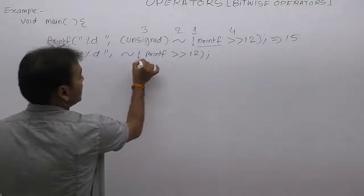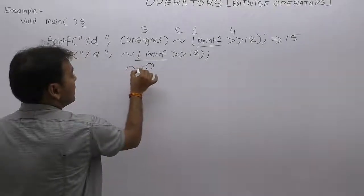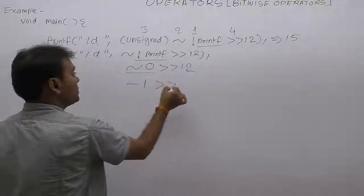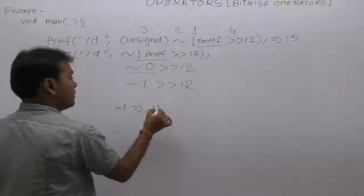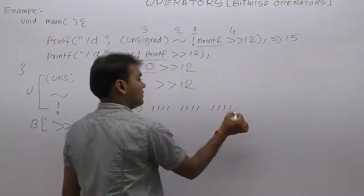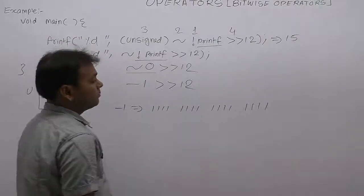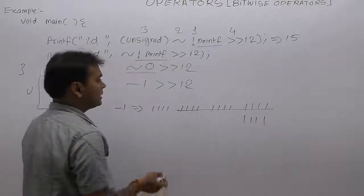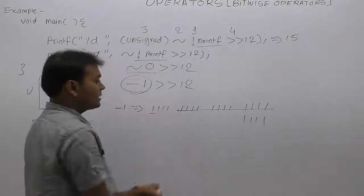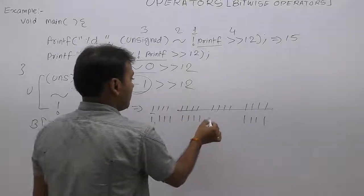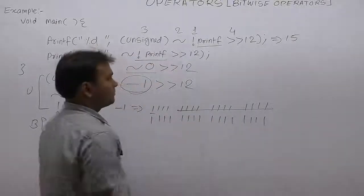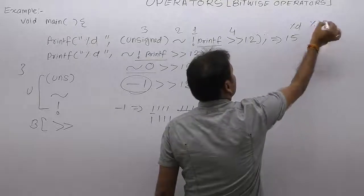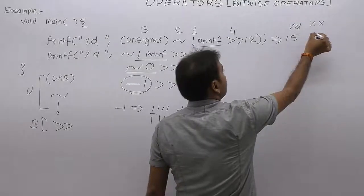For the second expression: again applying NOT converts to 0, applying ones complement gives -1, then right shift by 12. The binary number of -1 is sixteen times one (16 bits all 1). After removing 12 rightmost bits and inserting 12 ones on the left, all bits remain 1. The result is all times one — 0xFFFF — which is equivalent to 15 in the upper nibble, displayed as f.